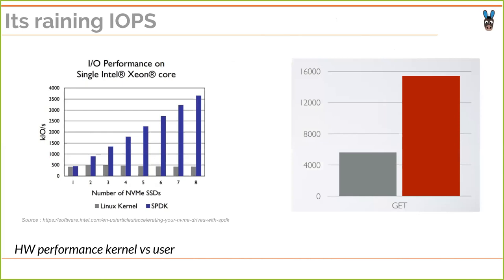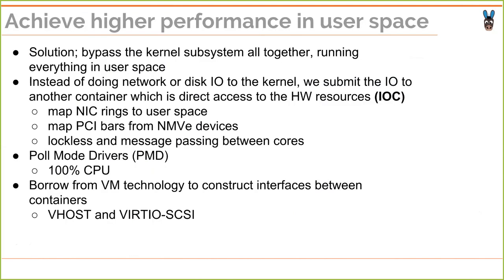Intel published data showing how the Linux kernel scales by adding a number of SSDs versus the SPDK framework, which bypasses the kernel. By bypassing the kernel, performance scales linearly as expected. Similarly for networking, a simple web server running in user space versus in kernel shows significant gains. It really pays off to architect applications in user space, keeping in mind context switches.